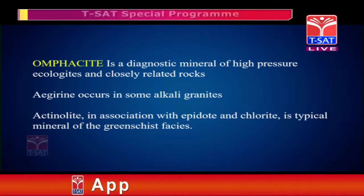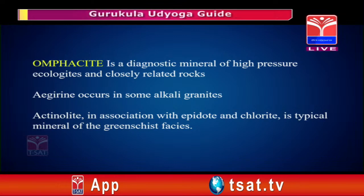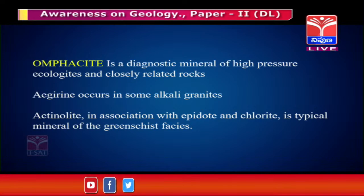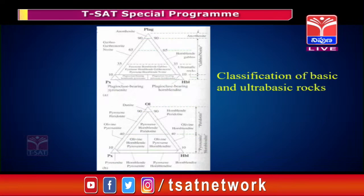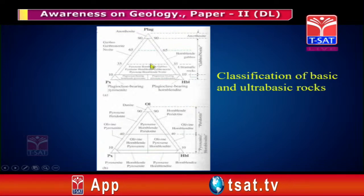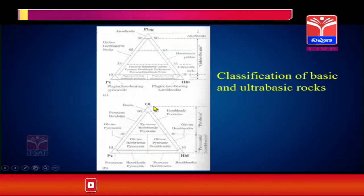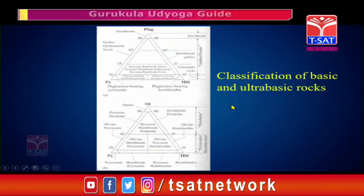Aegirine–actinolite occurs in association with epidote and chlorite, typical of greenschist facies. For basic and ultrabasic rocks, plagioclase is important. There are only two monomineralic rocks: the plagioclase-only rock is anorthosite, and the olivine-only rock is dunite. We have to remember these two especially — a slide has been prepared for them.